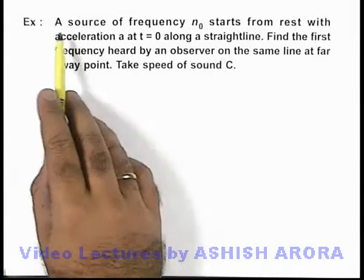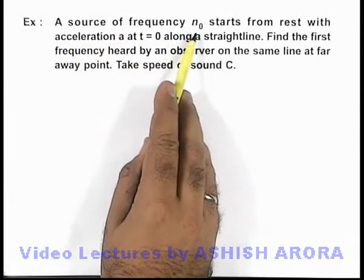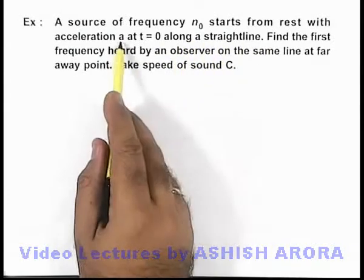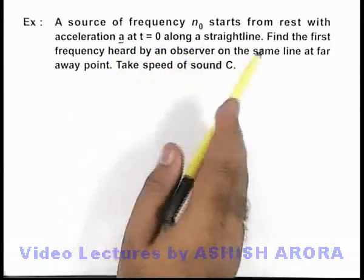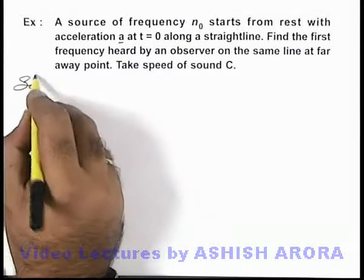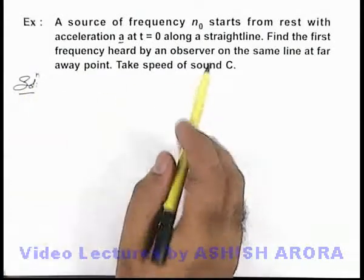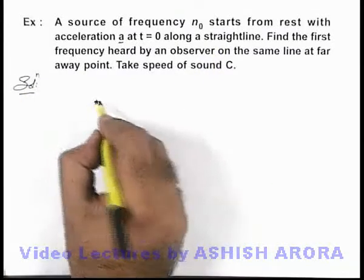In this example, we are given that a source of frequency n₀ starts from rest with an acceleration a at t = 0 along a straight line. Let's draw the figure simultaneously. There is a source which is having frequency n₀.